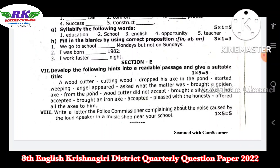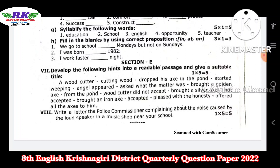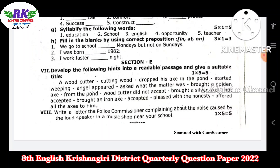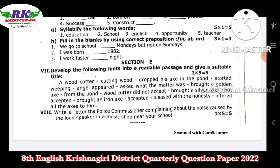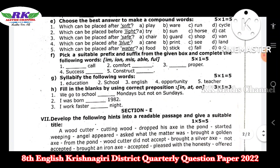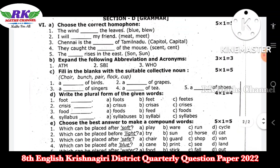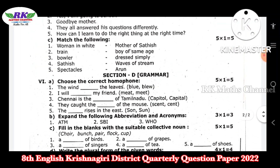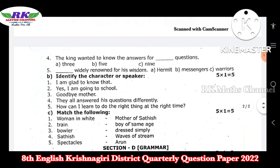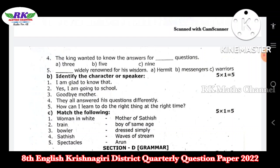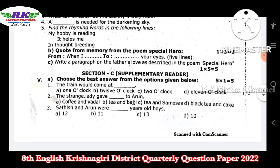For all your letters, write a letter to the police commissioner complaining about the noise caused by the loudspeaker in the music shop near your school. So the letter is given — asking the police commissioner to cancel out the case. This is a communication paper question, and this question may come from the LRD section.